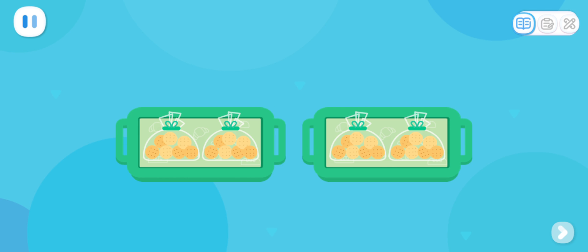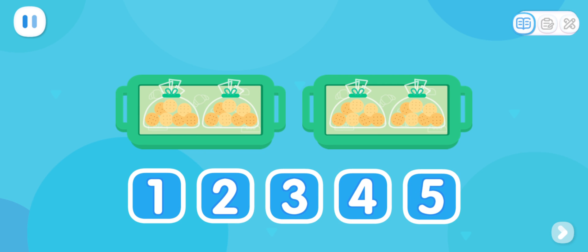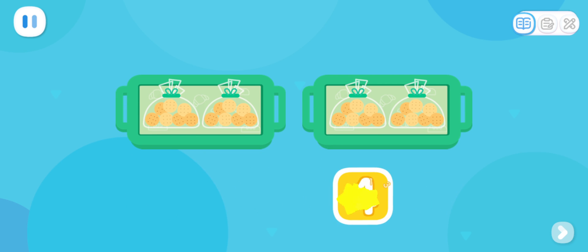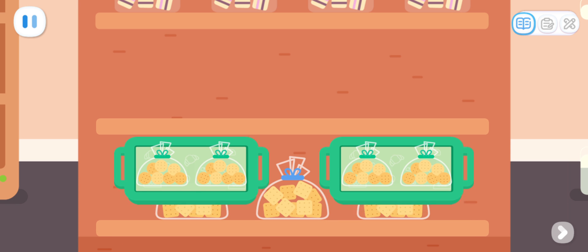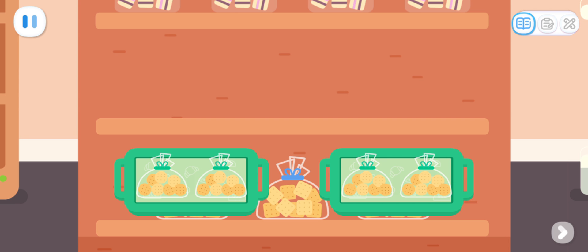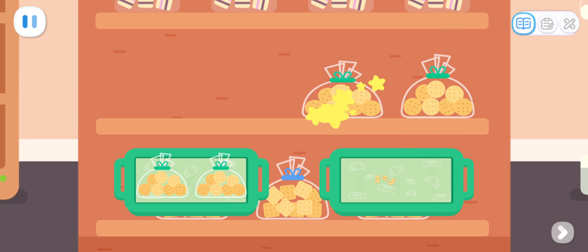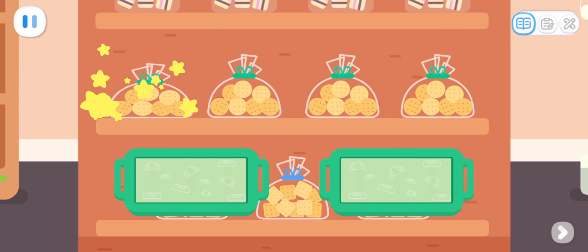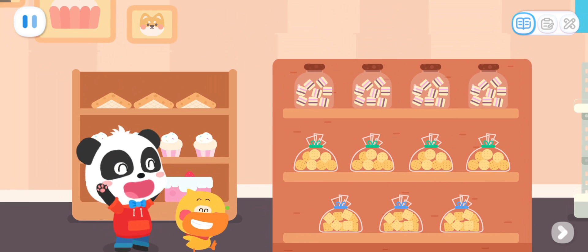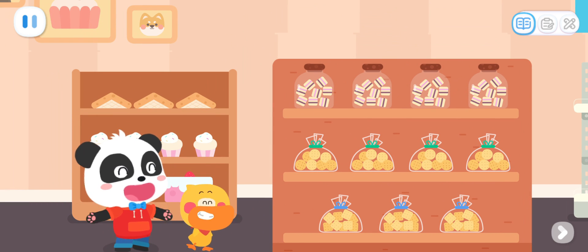Let's count the cookies first. How many bags of cookies are there in these two trays? Great! There are all together four bags of cookies. We can put the cookies on the shelf now. It's done! Nice and crispy cookies!